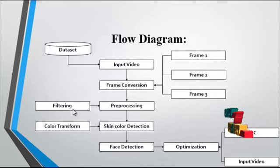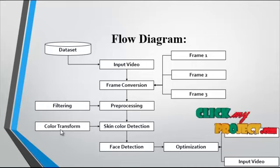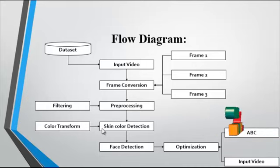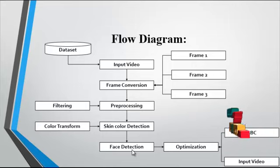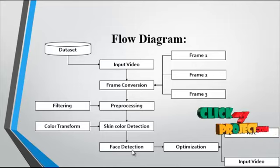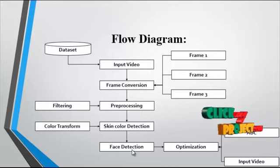After noise removal, the noise-free frames undergo skin color detection. In skin color detection, color transformation is used to detect the skin. After the color transformation, the skin color is detected and the face is also detected. After detecting the face, a bounding box is created for the extracted face region.